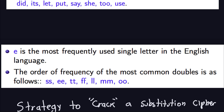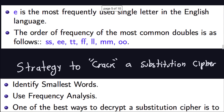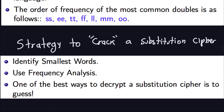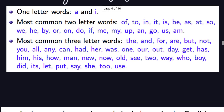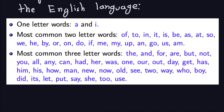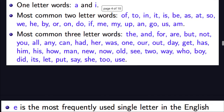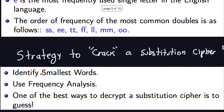Now let's discuss the strategy for cracking a substitution cipher before going into the example. The first step is to identify small words — look for words that are a single letter in the ciphertext. For example, if you see a single letter like L standing alone, that L probably represents either A or I, since those are the only common one-letter words in English.